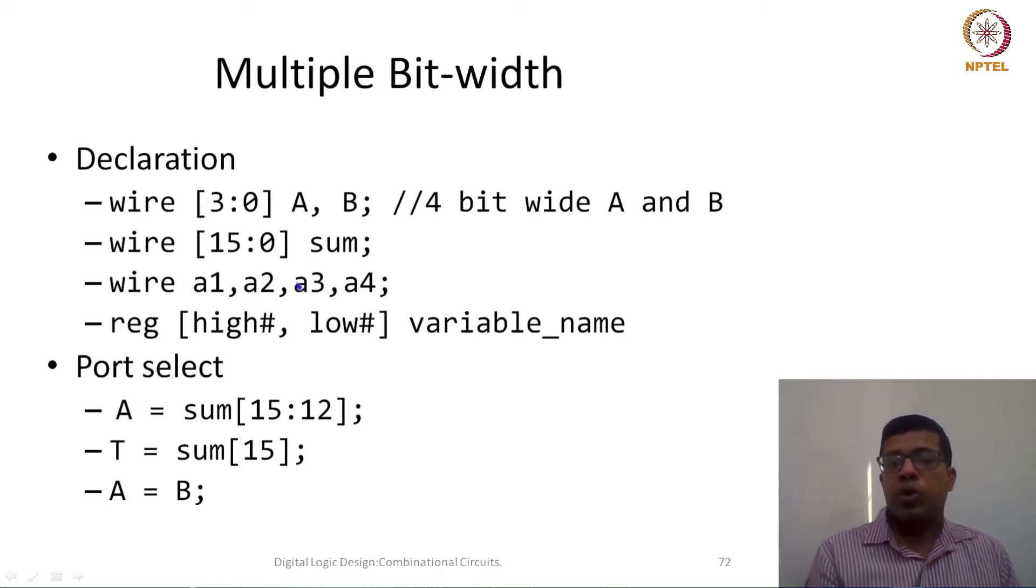If I want to take only single bit out of it, so let's say T is a single bit wire, then I can say any particular signal, let's say 15, so 15th bit of sum would be assigned to A. If two signals are of same size then no such square bit specification is required. We can simply say A equal to B. Both are 4 bit wide signals, so A could be assigned to B without writing anything in the square bracket.